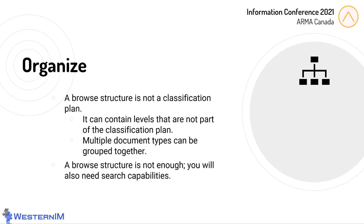A browse structure that assists users in finding things is useful, but it isn't always enough. Sometimes you may have a specific piece of information you are looking for that isn't necessarily related to the choices presented by the browse structure — like if you have an invoice number but the invoices are organized by vendor and fiscal year. In that case, you want to be able to search for the document instead of browsing to it. And here is something that most people don't think about but provides tremendous value: provide a structure for transient files — a place where people can put things but they will be automatically deleted after 90 days. This gives people a place to put things they aren't sure about without forcing them to pick a permanent spot.